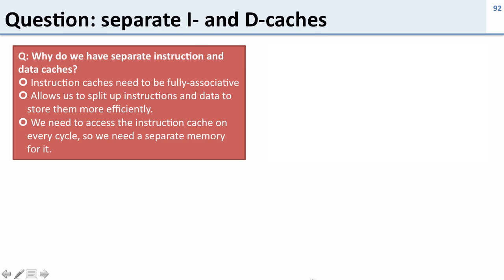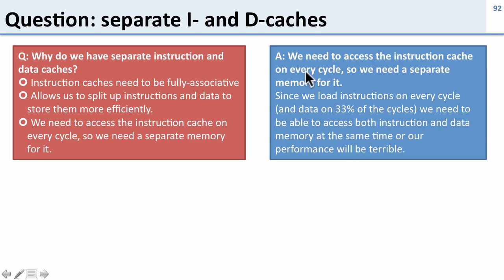Why do we have separate instruction and data caches? Well, the reason is we need to access the instruction cache on every cycle, so we need a separate memory for it.